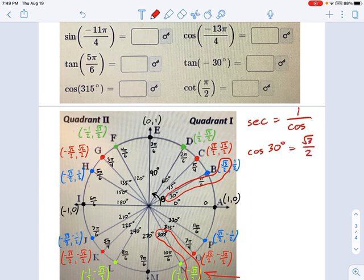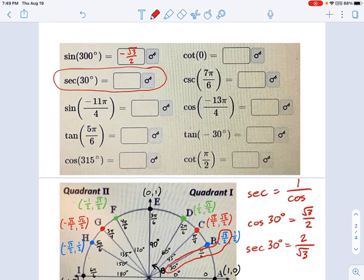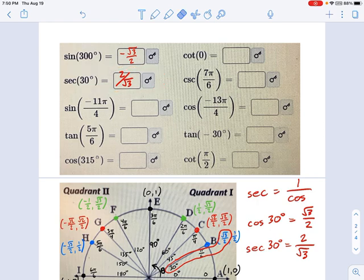Now secant is just cosine flipped over, right? It's the reciprocal. So that means secant of 30 degrees is 2 divided by radical 3. Now if you want, you can rationalize this and say 2 radical 3 over 3, but it is completely unnecessary. I think the most important part here is that you understand how to use the unit circle and find trig values or reciprocal trig values, not whether or not you can simplify fractions. We will deal with that another time. So this is going to be 2 divided by square root of 3 for the secant of 30 degrees.